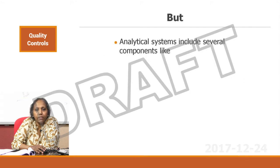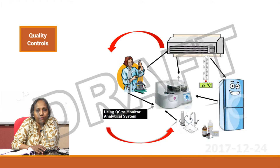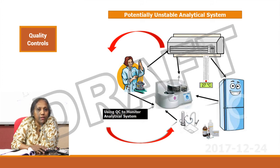But these analytical systems include several components like equipment, reagents, calibrators, environment, and operators, and all these are subject to change. Look at this picture — there are so many factors in there: there is an operator who can be a different person the next day, analytical equipment, reagents, laboratory water, storage conditions, refrigerator, and ambient temperature monitoring. So there are so many variables in a laboratory which can make analytical systems unstable.